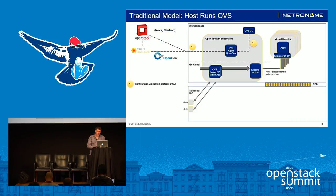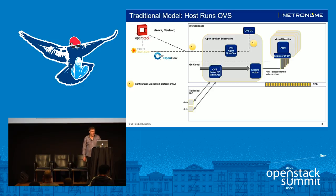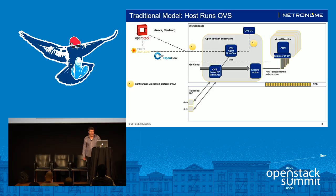Let's look at the traditional OVS model to get started. Traditionally, you would have a NIC that does not do any intelligent processing. This NIC would then feed traffic into the Open vSwitch subsystem, composed of the kernel data path as well as the user mode agent. A typical packet would go first to the kernel. The kernel would notice it doesn't know anything about this packet or the flow to which it belongs, and would send it to user mode. The user mode would then push down a flow entry into the kernel data path, and all subsequent packets of that flow would get forwarded more or less directly to the virtual machine.